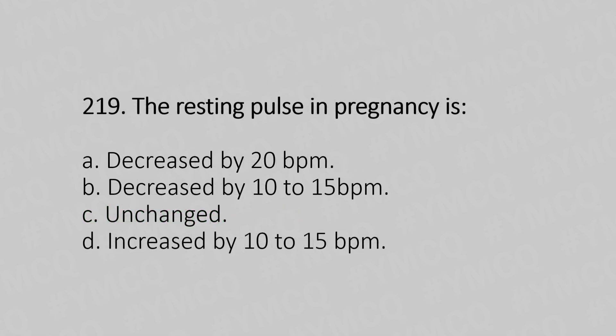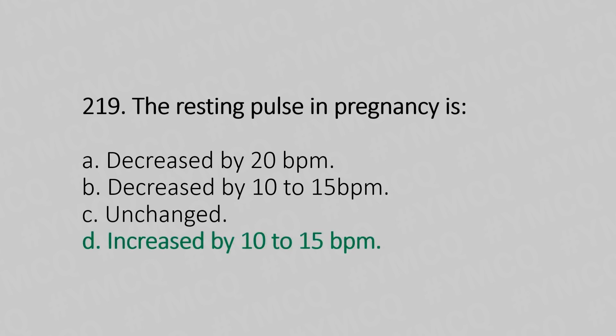Question 219: The resting pulse in pregnancy — Option A: Decreases by 20 bpm. Option B: Decreases by 10 to 15 bpm. Option C: Unchanged. Option D: Increases by 10 to 15 bpm. The answer is Option D: Increases by 10 to 15 bpm.